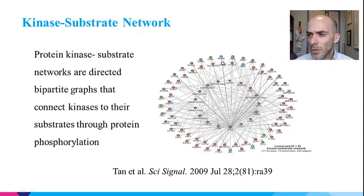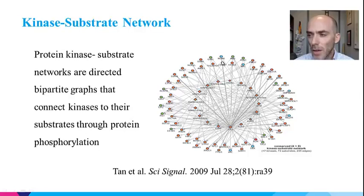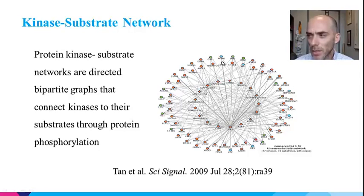One thing you can do is focus on one type of interaction — for example, protein kinase-substrate networks. These are directed bipartite graphs that connect kinases to their substrates through protein phosphorylation. These networks are useful when analyzing data from phosphoproteomics to link detected changes in phosphopeptide levels with the kinase cascades responsible for those observed changes.